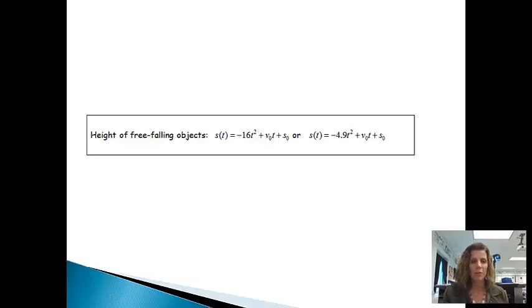The height of a free-falling object, there's a certain position equation, and notice again I have s(t) for this one because that's just the way that we usually denote position. The formula is negative 16t squared plus v sub zero t. This v sub zero stands for the initial velocity—how fast was it going when it left the target or the person who was throwing it or whatever?